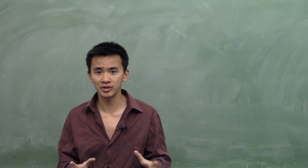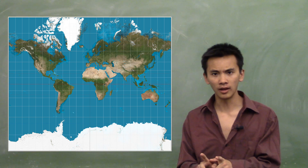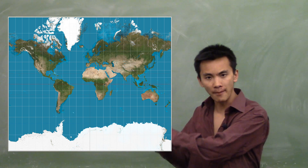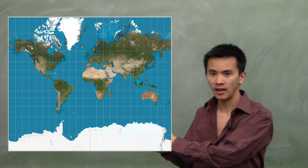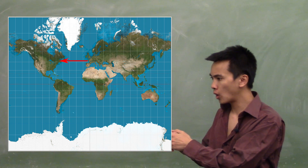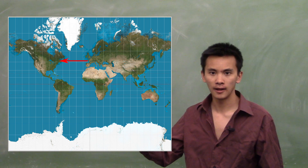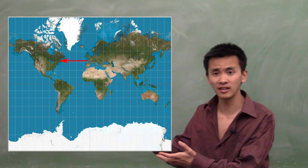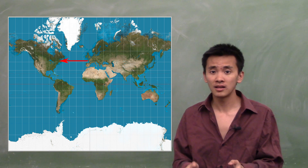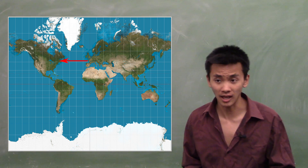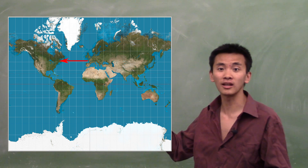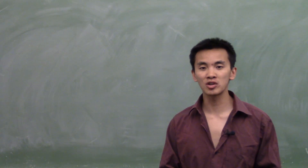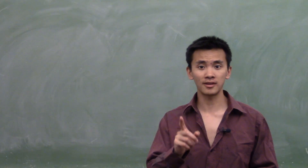Every sailor wanted this Mercator map. But let's think about this for a while. If you were shipping from Europe to America back then, you would just go westward, and thus on the Mercator map you would follow a straight line. But we've said that shortest paths are not straight lines — and in fact, this straight line is not a shortest path. So ships were not using the shortest path.